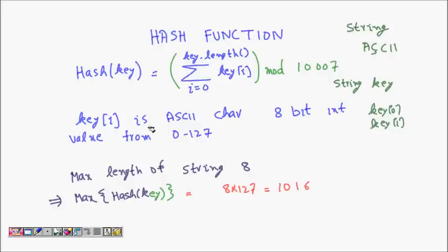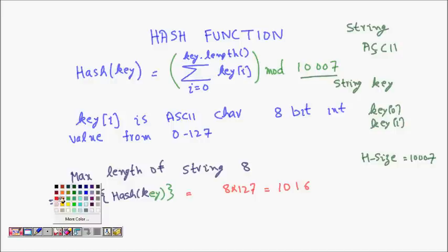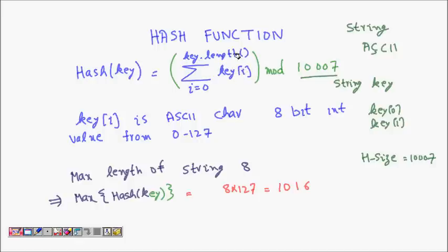Say the table size is 1007, which is again a prime number. We define hash(key) as the sum of ASCII values — key[0] + key[1] + key[2] + ... up to the length of the string — and then take that sum modulo 1007 to get the remainder. That remainder is your hash value.